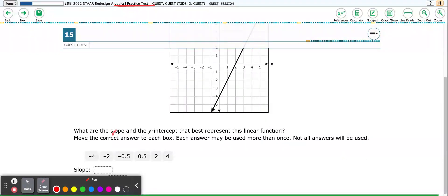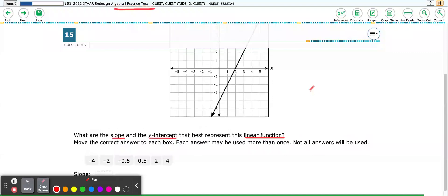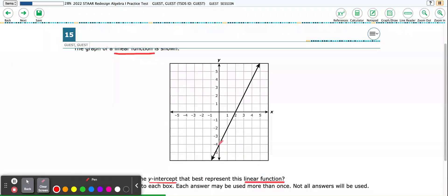What are the slope and the y-intercept that best represent the linear function? So the slope is our rate of change for the graph. As we look left to right, moving in this direction, I'm going to pay attention to my line. My line actually moves up or is positive.